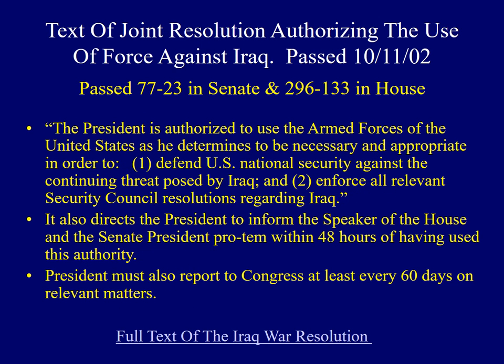To make a link to current events: the text of the joint resolution authorizing the use of force against Iraq, passed by Congress in October 2002, gave President Bush the authority to send troops into combat in Iraq without a declaration of war — and it passed very strongly in both the House and Senate. Bush was authorized to defend U.S. national security against the threat posed by Iraq and to enforce all relevant Security Council resolutions. The President also had to keep the Speaker of the House and the President Pro Tem of the Senate informed, and to report to all of Congress every 60 days.